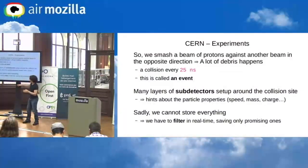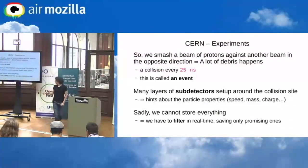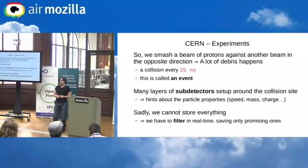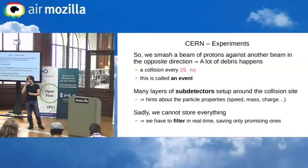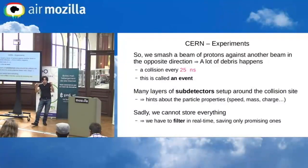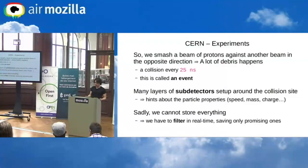From those hints — speed, mass, charge — you get information about which particles may have been there. You can't store everything, so you filter in real time with electronics and then with computers running Linux, saving only what looks interesting. For example, if a theory predicts two protons decaying into a specific chain of particles with values in a certain range, you program FPGAs to check for that signature and save it if matched.